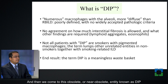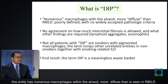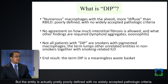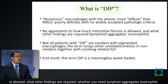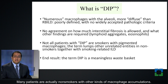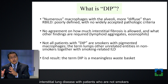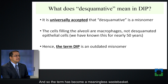Then there is this obsolete or near-obsolete entity known as DIP, or desquamative interstitial pneumonia. Many authors feel this entity has numerous macrophages within the alveoli, more diffuse than seen in RBILD, but the entity is actually pretty poorly defined with no widely accepted pathologic criteria. There's no agreement between papers on how much interstitial fibrosis is allowed, what other findings are required, whether you need lymphoid aggregates or eosinophils. And finally, not all patients with DIP are smokers with pigmented macrophages — many are non-smokers with other kinds of macrophage accumulations. The end result is that DIP lumps together smoking-related interstitial lung disease with non-smokers, making the term a meaningless wastebasket.